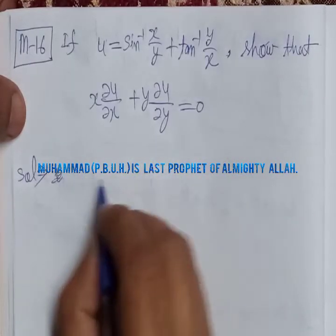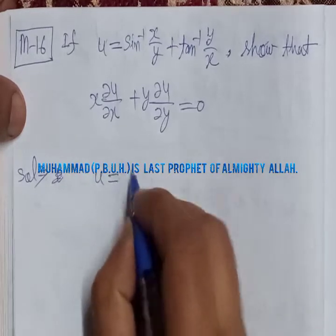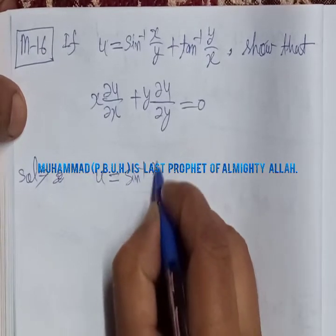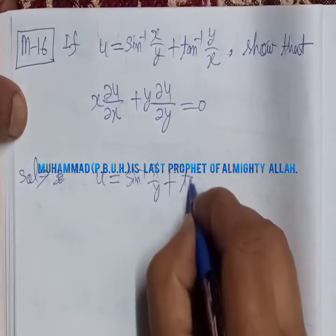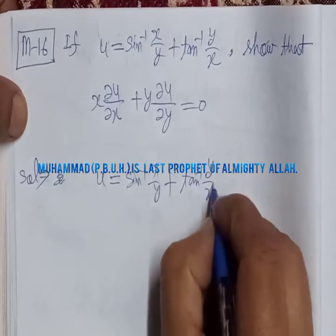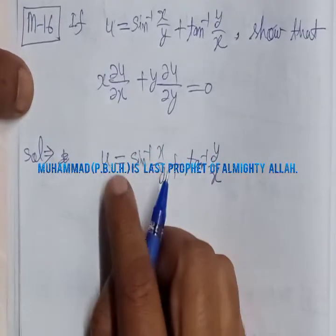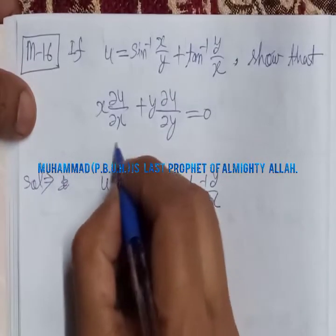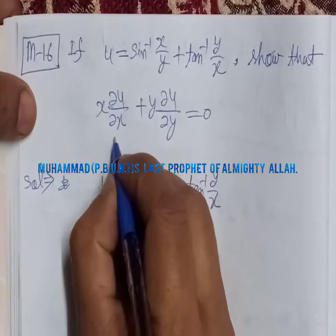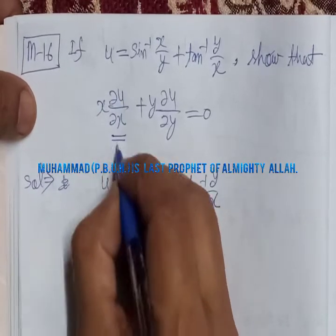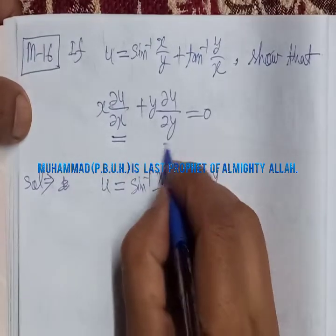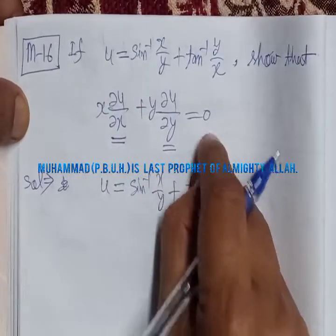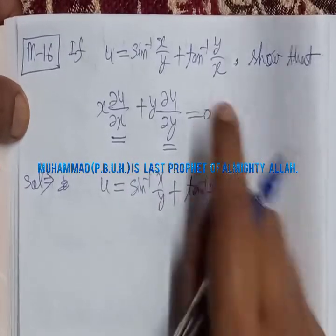First we write the function u, which is a function of x and y: u = sin⁻¹(x/y) + tan⁻¹(y/x). Because we have to prove this result, we first find the value of ∂u/∂x, then ∂u/∂y, and substitute these values into the left-hand side to get 0 on the right-hand side.